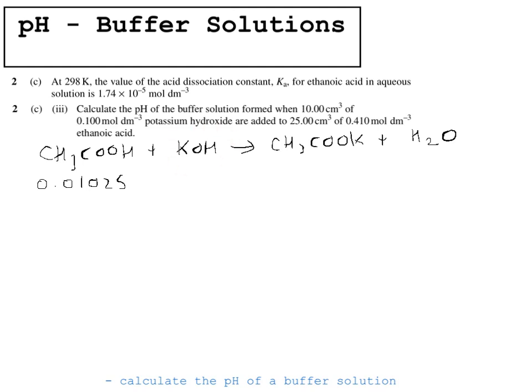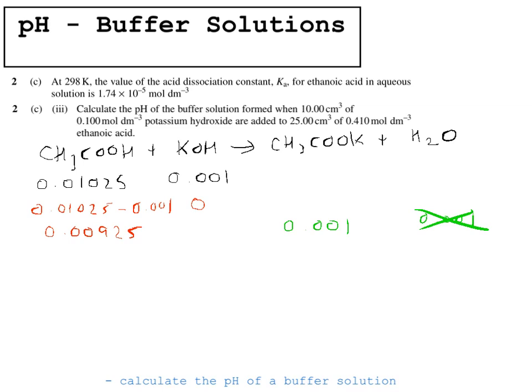Moles of KOH = 10 × 0.1 / 1000 = 0.001 mol. After reaction, all the KOH is used up (not in excess). Moles of CH₃COOH remaining = 0.01025 − 0.001 = 0.00925 mol. Moles of salt CH₃COOK produced = 0.001 mol. The water produced is irrelevant. We need the moles of acid remaining and the moles of salt produced for the Ka expression.